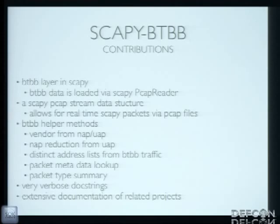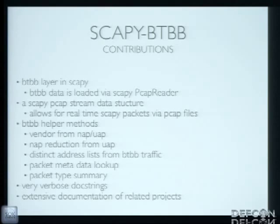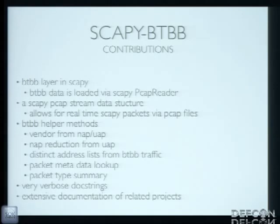Looking at MAC addresses all day, I built methods to give me a human-readable format. If I had a vendor NAP and a UAP, I could look them up via manufacturer files and get the manufacturer name. So as I'm streaming this data, I can see, okay, this is an Apple device. When we only have a UAP, I can do a NAP reduction — a typical vendor list has about 20,000 vendors, but with a UAP I can reduce it down to 30 to 60 vendors and their associated NAPs. So if I see the vendor I'm actually looking for, I can associate its NAP along with it.